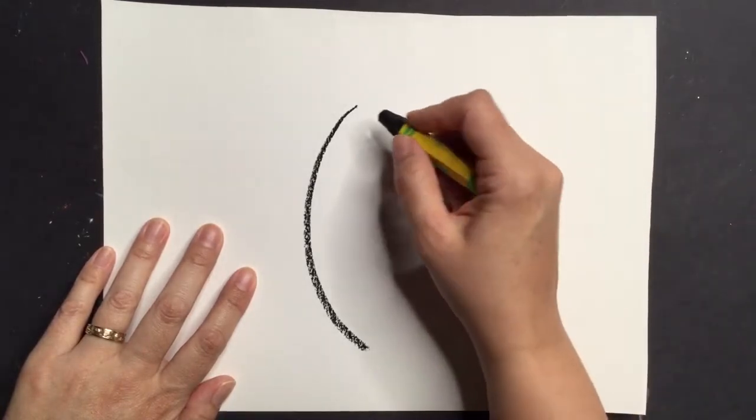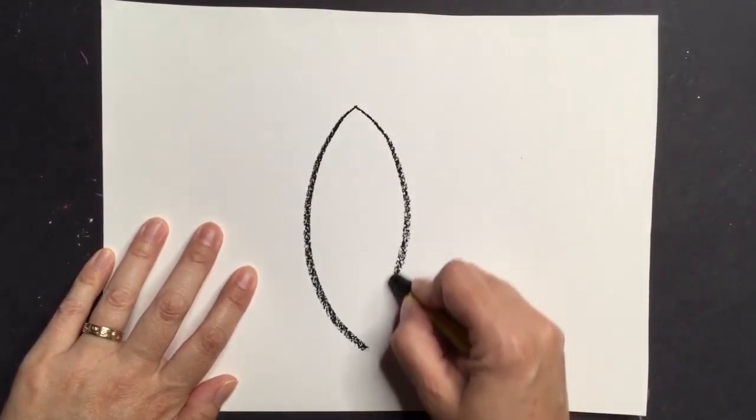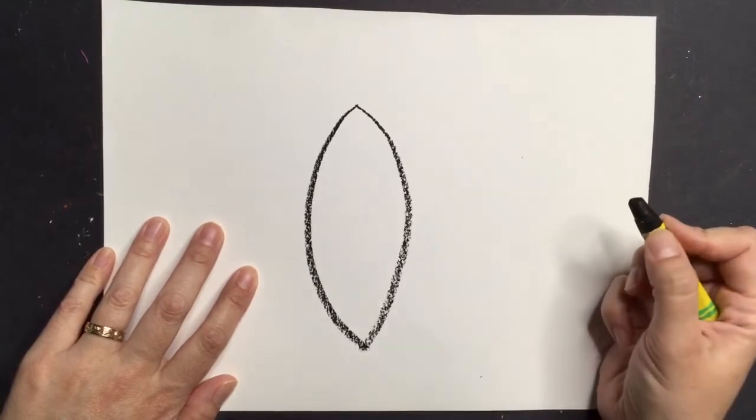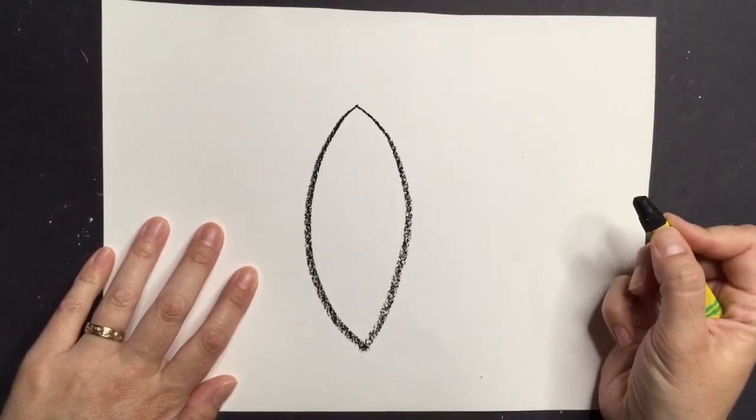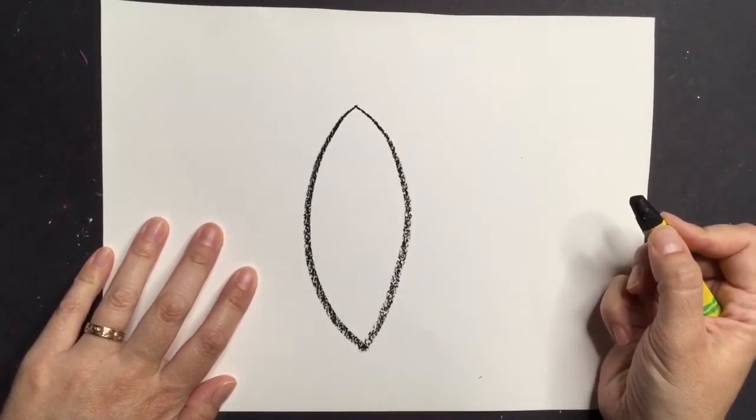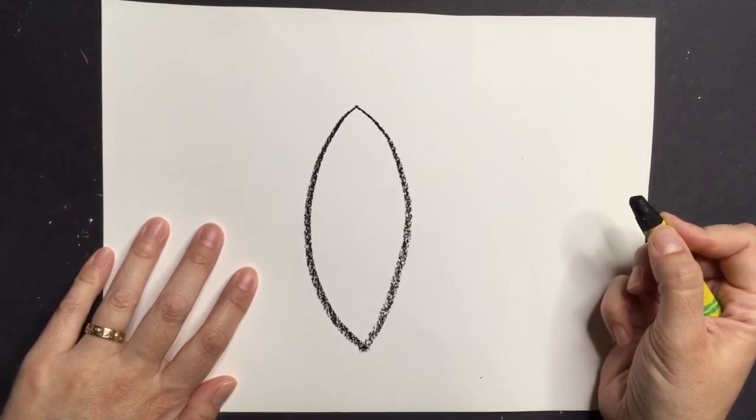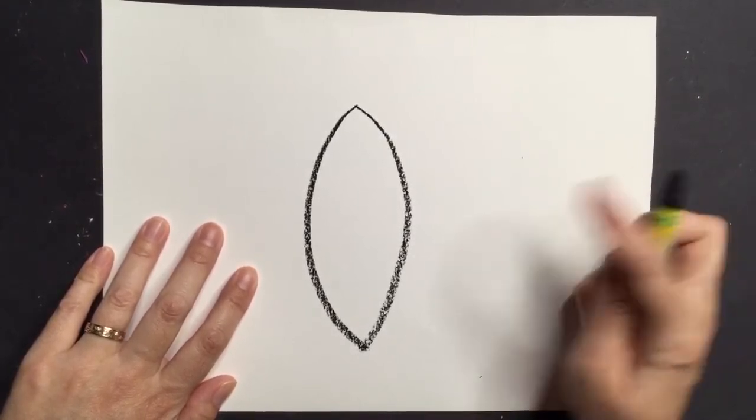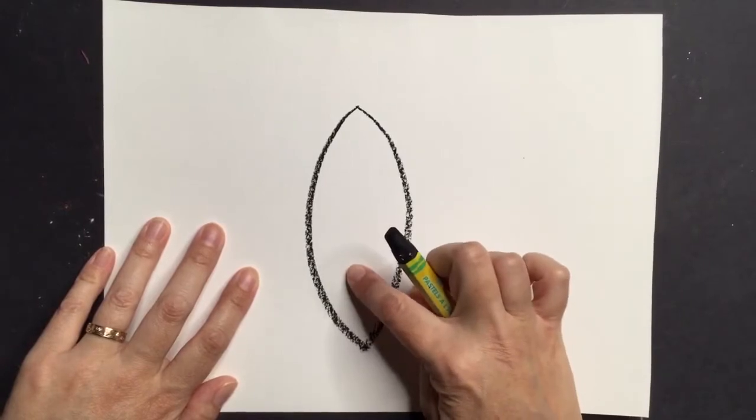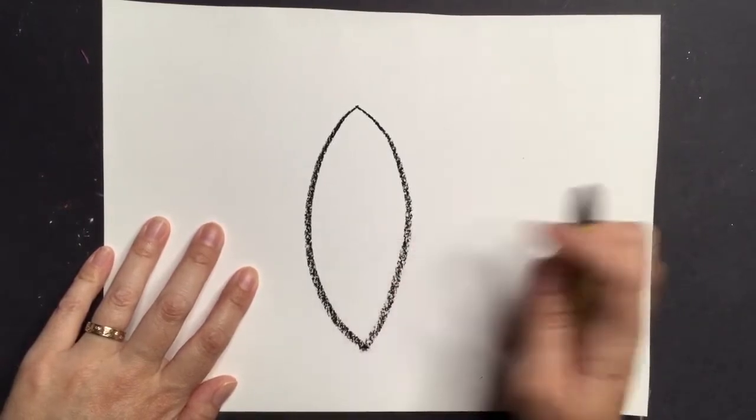Then draw another curvy line that connects with it, like this. Luego dibuja otra línea curva que se conecta con ella, así. Este es el primer segmento de la calabaza. This is the first segment of the pumpkin.